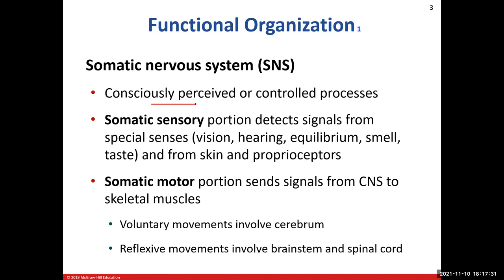The motor component deals with skeletal muscle — things that you can voluntarily control. The only type of effector that we can consciously and voluntarily control is skeletal muscle tissue. We can't control cardiac muscle tissue voluntarily, we can't control smooth muscle tissue voluntarily, and we can't control our glands. So the somatic nervous system effector organ is skeletal muscle. Keep in mind our special senses — taste, touch, equilibrium, smell, anything from the skin — pain, temperature, vibration, light touch, discriminative touch — all travel on the somatic sensory pathway.